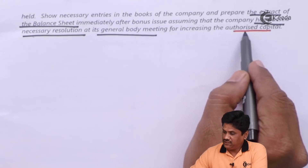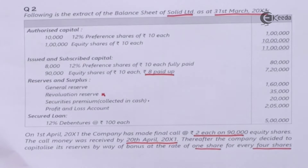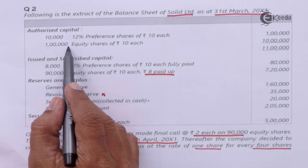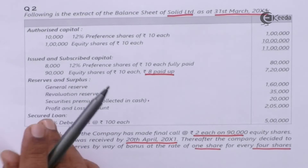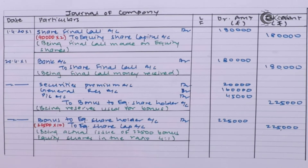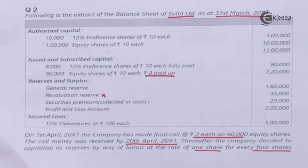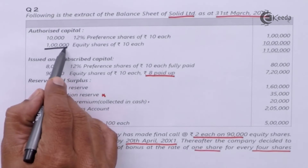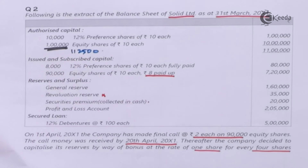The question asks to prepare the extract of the balance sheet assuming the company has passed the necessary resolution at the general body meeting for increasing the authorized capital. Now why is there a need to increase authorized capital? In my original balance sheet, authorized equity shares were 1 lakh. But presently I have issued a further 22,500 bonus shares. Existing issued shares were 90,000, so 90,000 plus 22,500 = 1,12,500 shares, which would exceed the original authorized capital. So we need to pass a special resolution.